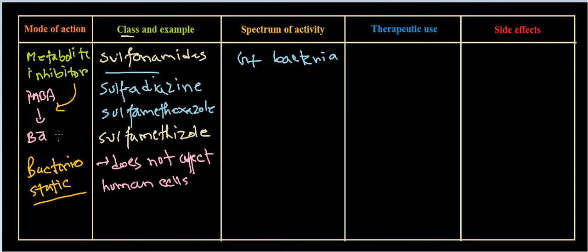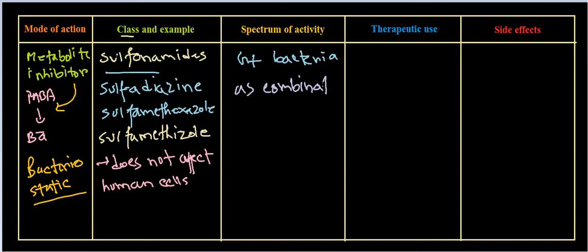Because sulfonamides are bacteriostatic antibiotics, in most cases they are formulated to be used along with other antibiotics — usually as a combinatory treatment with other bactericidal antibiotics.